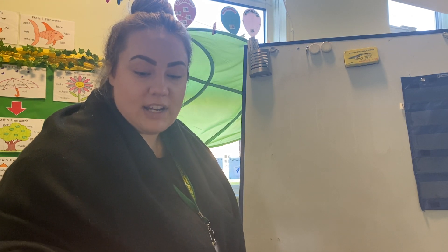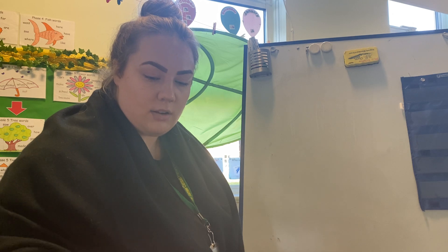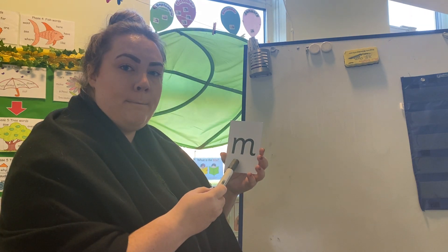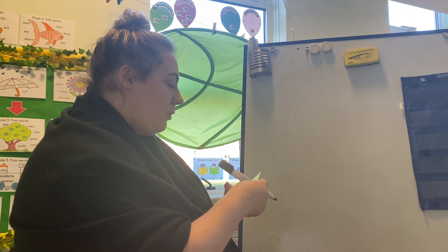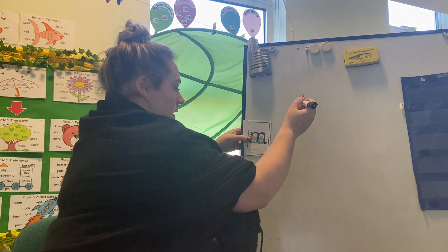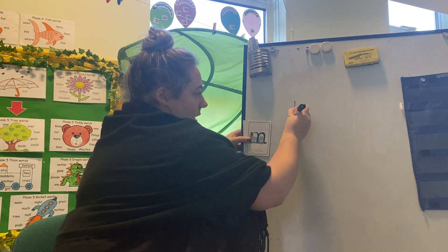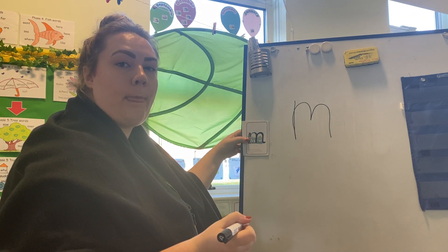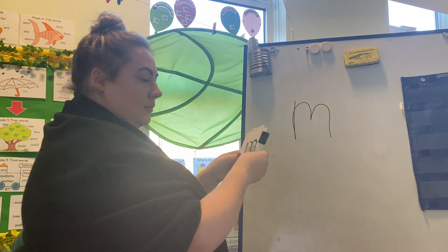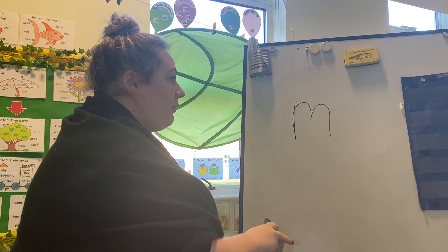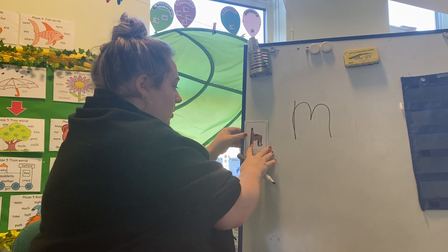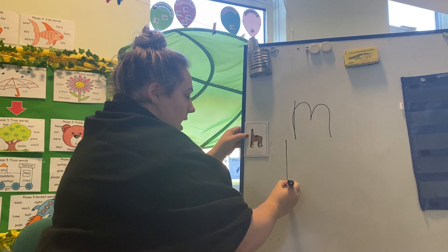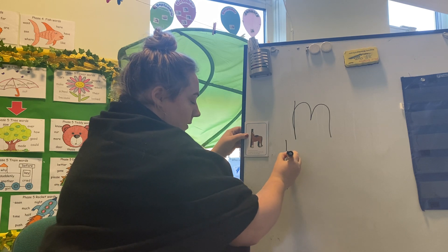Now we are going to write three sounds that we've already learned. Shall we give it a go? The first sound is 'mmm' — and we are going to do Maisy, mountain, mountain. Can you try? Well done. Our next sound is what you learned on Friday — we are going to do down the head, to the hooves and over his back. Your turn.